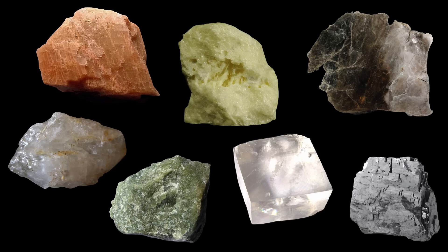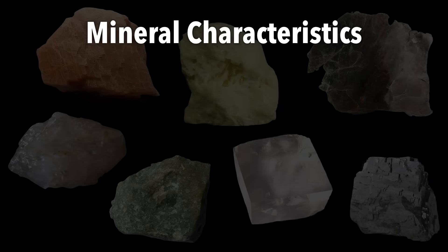One of our jobs is to be able to identify these minerals based on their mineral characteristics. The most obvious is, of course, color. That's sometimes useful, for example, in the case of sulfur, which is a very distinctive yellow color. However, keep in mind that there are other yellow minerals and that many minerals come in a variety of colors, so color is not always the most reliable characteristic for identification.